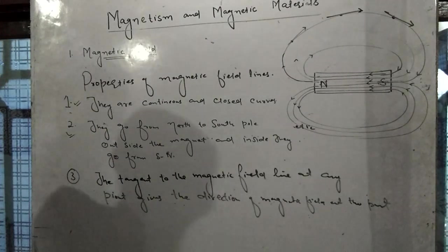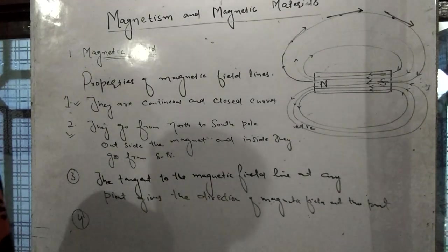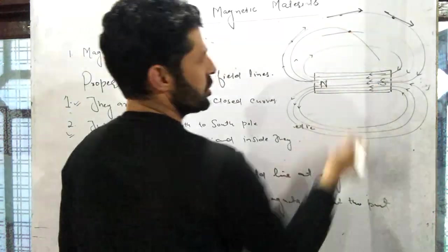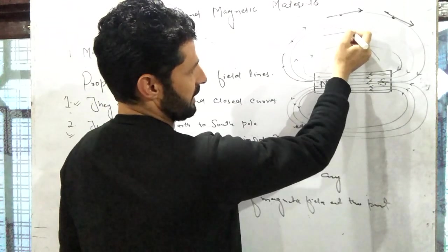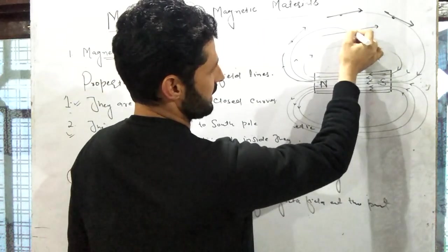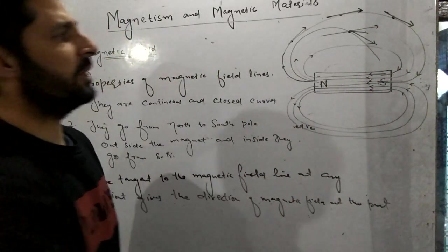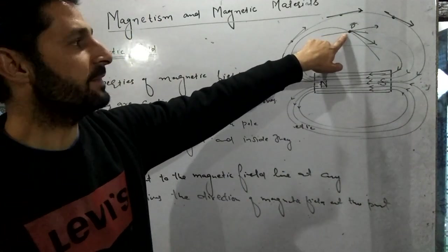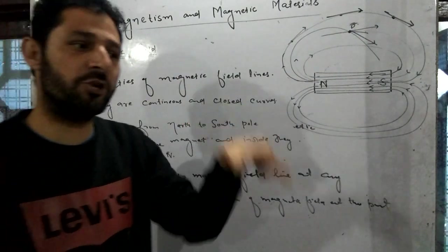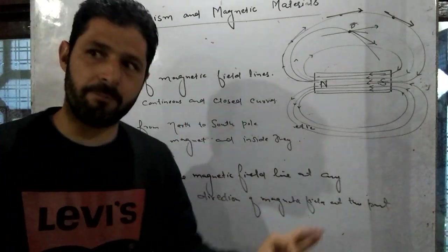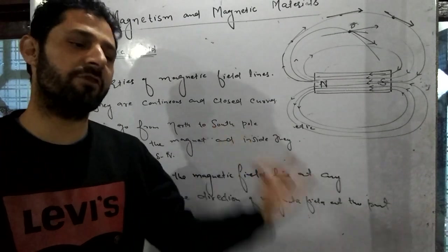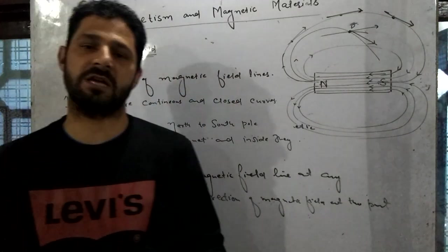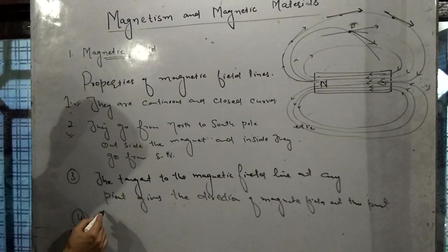Fourth property: no two magnetic field lines can intersect each other. If two magnetic field lines were to intersect at a point, then at that point of intersection there would be two tangents, meaning two different directions of the magnetic field at the same point. But a vector quantity cannot have two different directions at the same point simultaneously. Therefore, no two magnetic field lines can intersect each other.